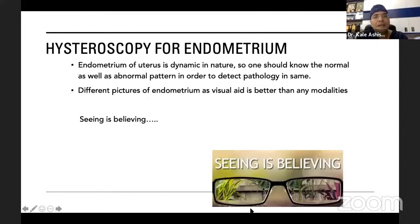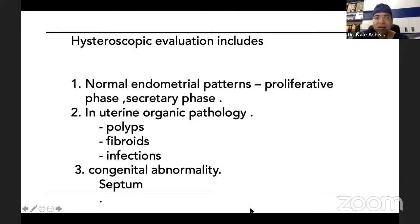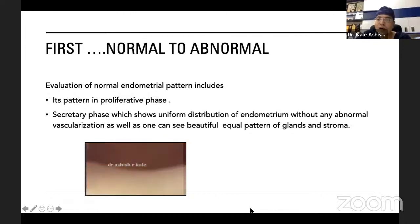Hysteroscopy for the endometrium: the uterine endometrium is dynamic, with secretory and proliferative phases. The hysteroscope provides a better visual aid, and in the same sitting we can address the issue. Hysteroscopic evaluation requires knowing the normal pattern — proliferative and secretory phases — as well as organic lesions like polyps, fibroids, infections causing intrauterine adhesions, and congenital abnormalities like septum. Before labeling a patient as unexplained infertility, one must identify any organic cause.